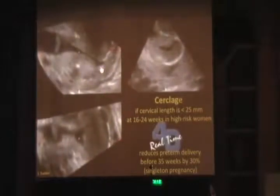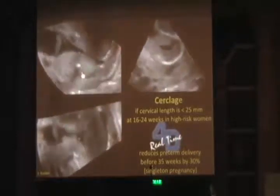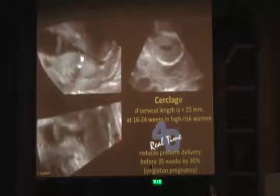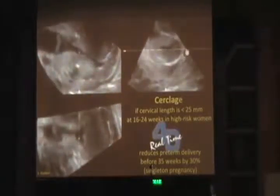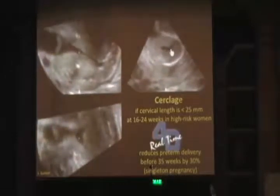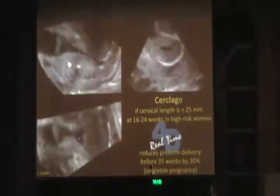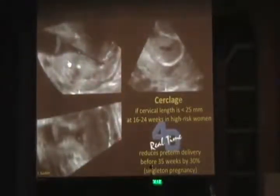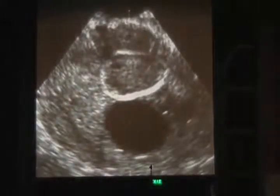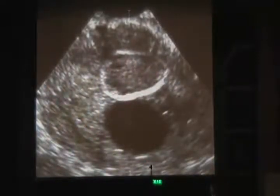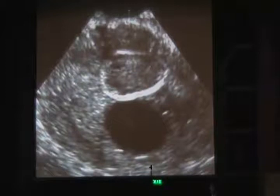As for cerclage, when mid-trimester cervical length is less than 25 mm in asymptomatic singleton pregnant women with a previous preterm birth, cervical cerclage has been shown to reduce the preterm birth rate before 35 weeks by a significant 30%. Cervical length should be measured every 2 weeks from 14 to 24 weeks, and cerclage may be advised if that length drops below 25 mm before 24 weeks. For the cerclage to work, it has to be properly placed — here is an example of a non-functional cerclage that has slipped out of the posterior lip and rests on the anterior lip due to improper anchoring.